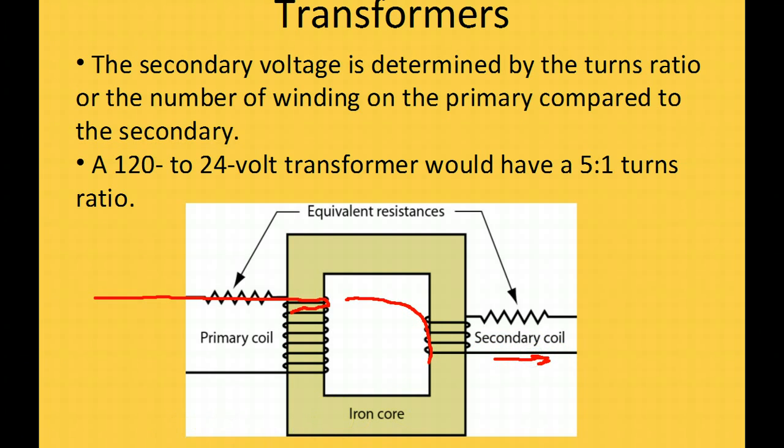The reason we have a transformer is we can't and don't want to use 120 volts as control voltage for our HVAC equipment. It's much easier and takes smaller power requirements and less expensive controls if we can step it down to 24 volts. The very nice thing about transformers is we can take 120 volts on the primary coil.